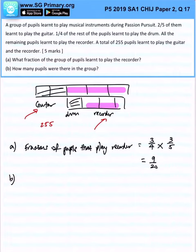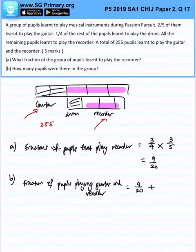That is nine over twenty plus two over five. I would want to make the denominators the same, so that I can get nine over twenty plus eight over twenty. And that will give me seventeen over twenty.